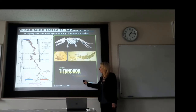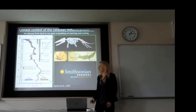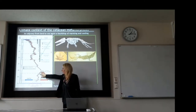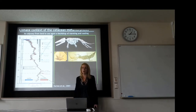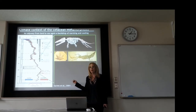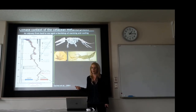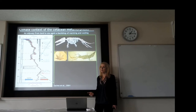Titanoboa is another example of a fossil that tells us it was really, really warm. That organism comes from this really warm interval of the early part of the Eocene. That fossil is really cool because it can tell you how climate changed in the past and how terrestrial ecosystems evolved in the face of environmental change.